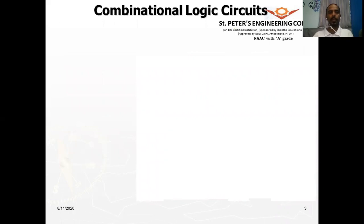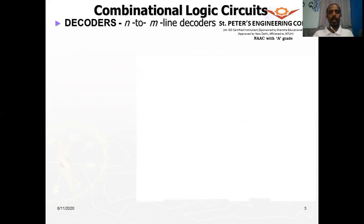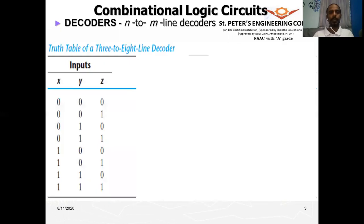As the name says, a decoder performs the decoding operation. We call this an N to M line decoder. N is the input and M refers to the output. For example, if we consider three inputs X, Y, and Z — X being the most significant bit and Z being the least significant bit — it is understood that X is MSB and Z is LSB. Similarly, if inputs are A, B, C, then A is MSB and C is LSB.